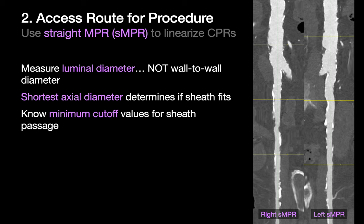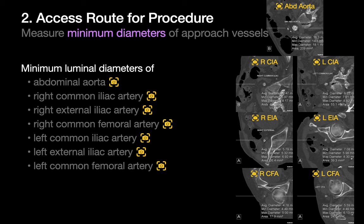A 5mm sheath may not fit in the lumen of a 6.5mm mean diameter vessel if the lumen is 2mm in one dimension and 11mm in the other. Be particularly meticulous when you're measuring diameters that are near known cutoff values. Using the straight MPRs, you will identify, measure, and report the minimum short-axis luminal diameters of the abdominal aorta and the common iliac, external iliac, and common femoral arteries on both sides. Remember to use the epigastric artery as your boundary between the external iliac and common femoral arteries, and do a short-axis image capture of each of these seven vessel sites.